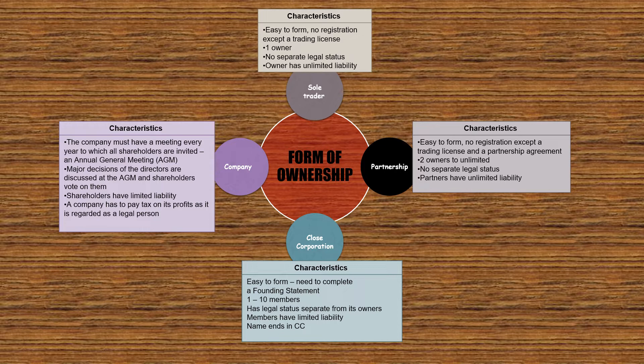Forms of ownership characteristics — sole trader: easy to form, no registration except a trading license, one owner, no separate legal status, and the owner has unlimited liability. This means if your business owes money to the bank, they can come after your personal assets. Partnership: easy to form, no registration except a trading license and a partnership agreement, two or more owners, no separate legal status, and partners have unlimited liability — they can also come after your personal assets if you cannot repay debts.